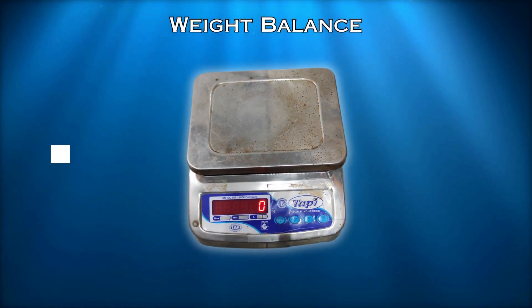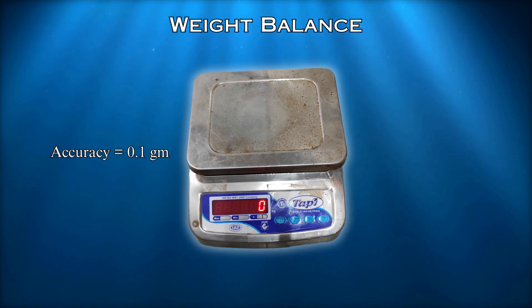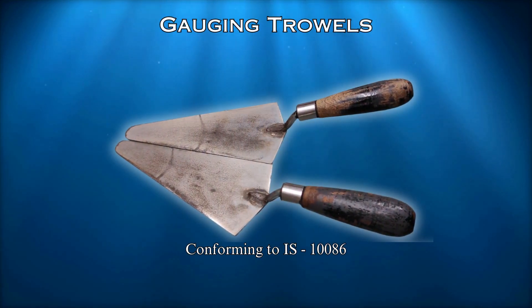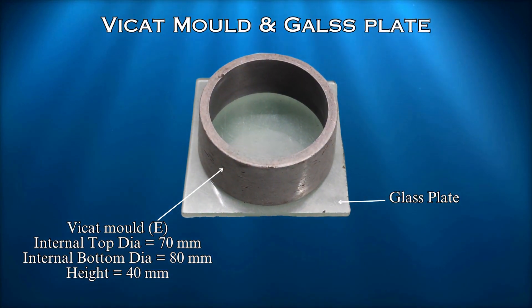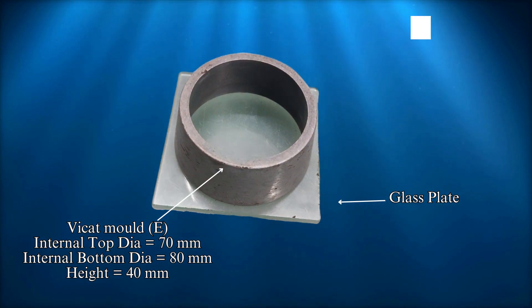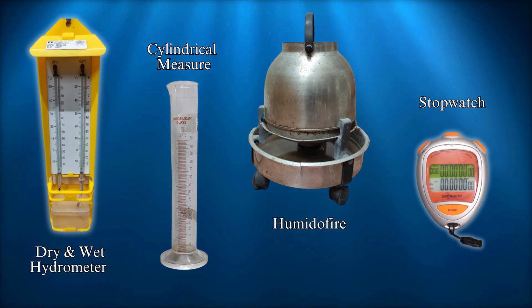A weighing balance with an accuracy of 0.1g and a measuring capacity of 1000–5000g is also required, along with a set of gauging trowels conforming to IS 10086. Additional items include a VCAT mold with a non-porous glass plate, light mineral oil, standard weight, cylindrical measuring jar, stopwatch, a humidifier, and dry and wet hydrometer.